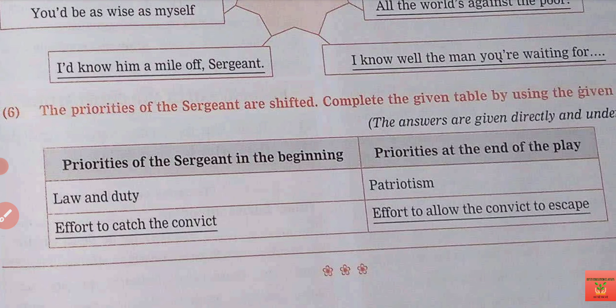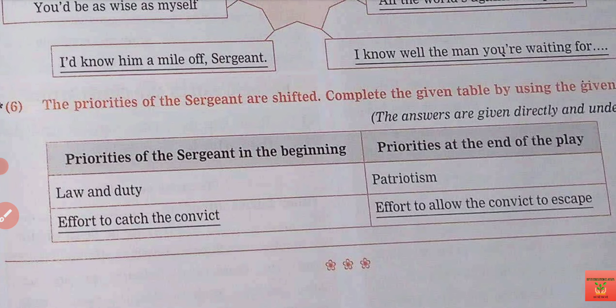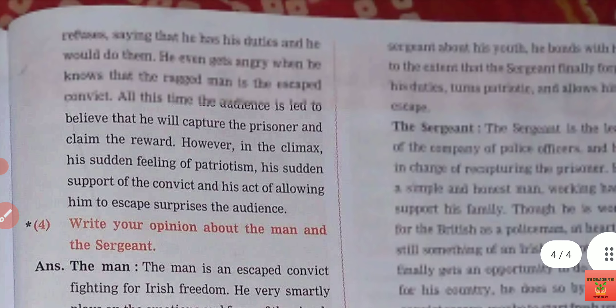The priorities of the sergeant are shifted. Complete the given table by using the given clues. How does the priority of the sergeant change? First, in the beginning his priority is law and duty — he can follow his duty 100%. He has many efforts to catch the convict — many attempts to catch the escaped prisoner. But as the story ends, he becomes patriotic. His love for Ireland comes back. He has a strong push, and the convict is able to escape from there. So these were the question answers of 4.2 of 11th standard English.